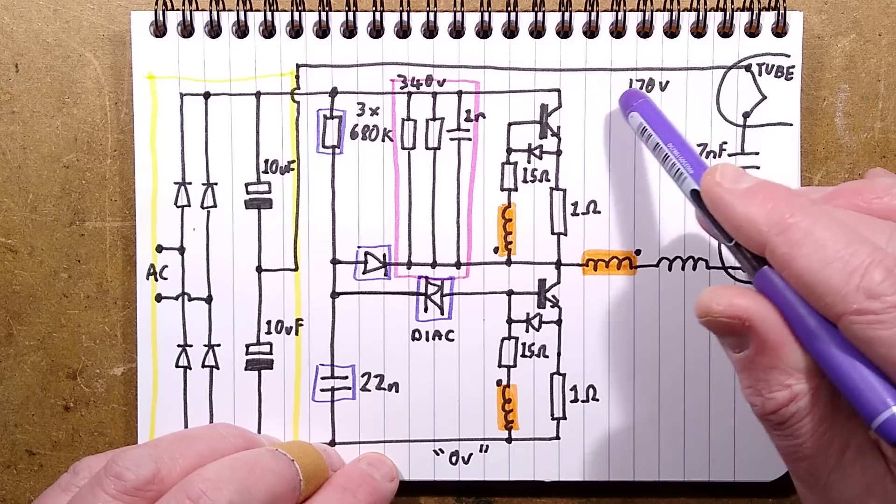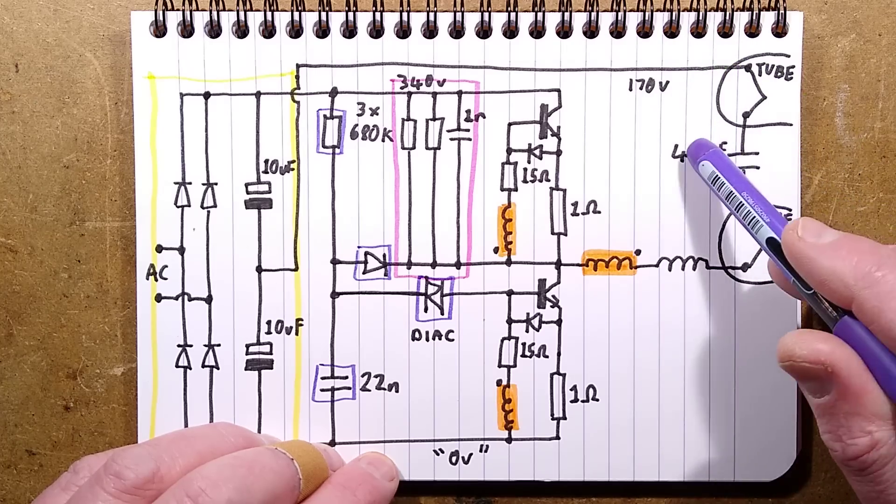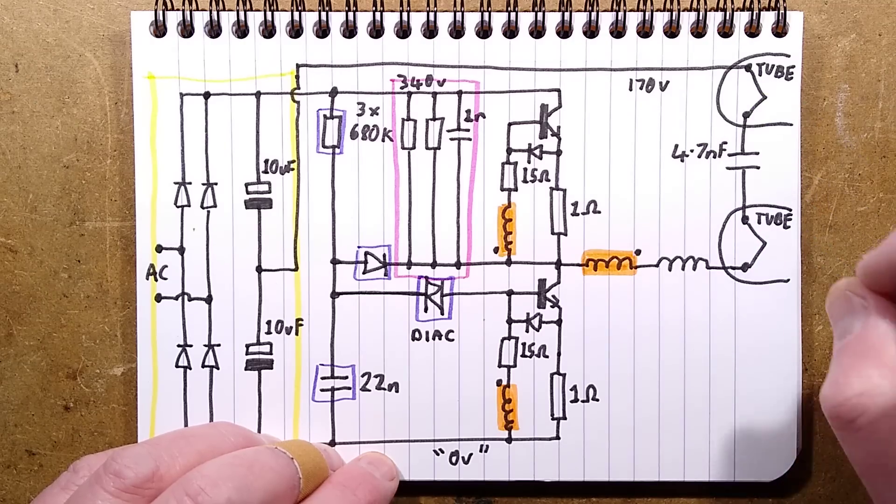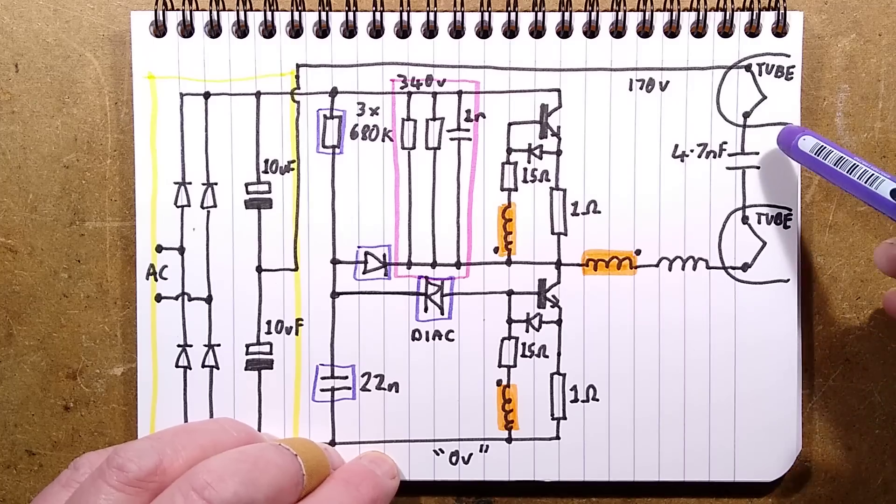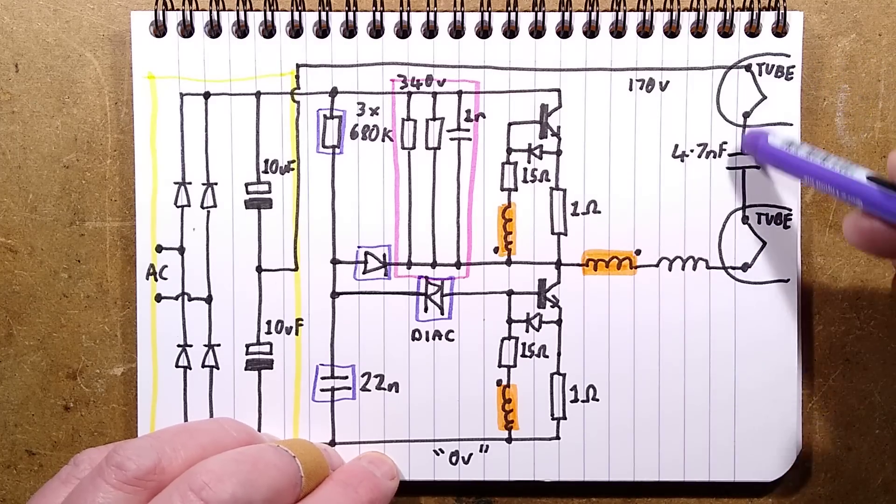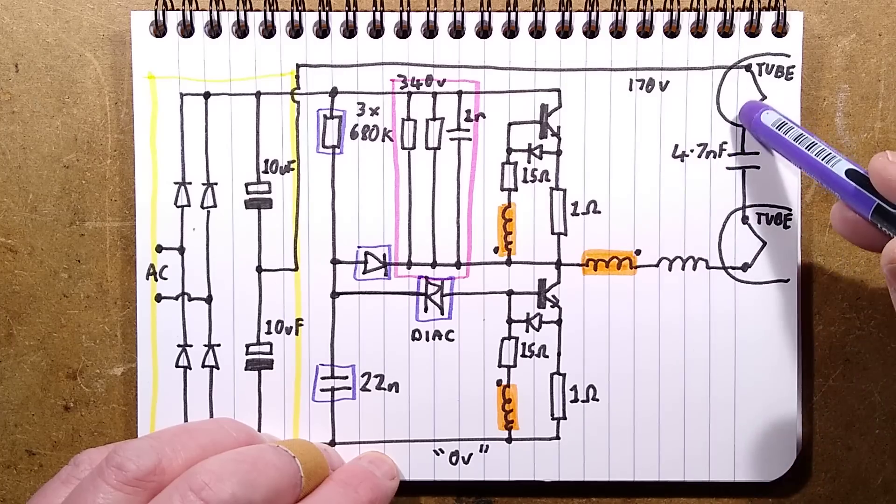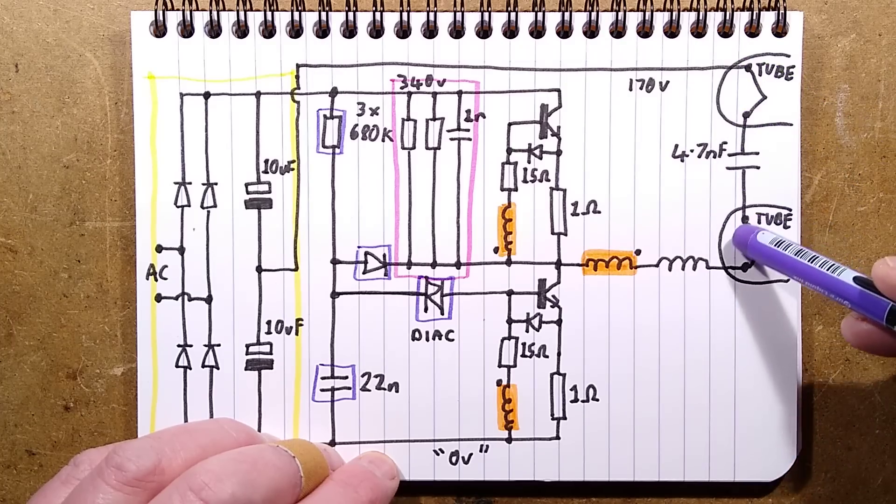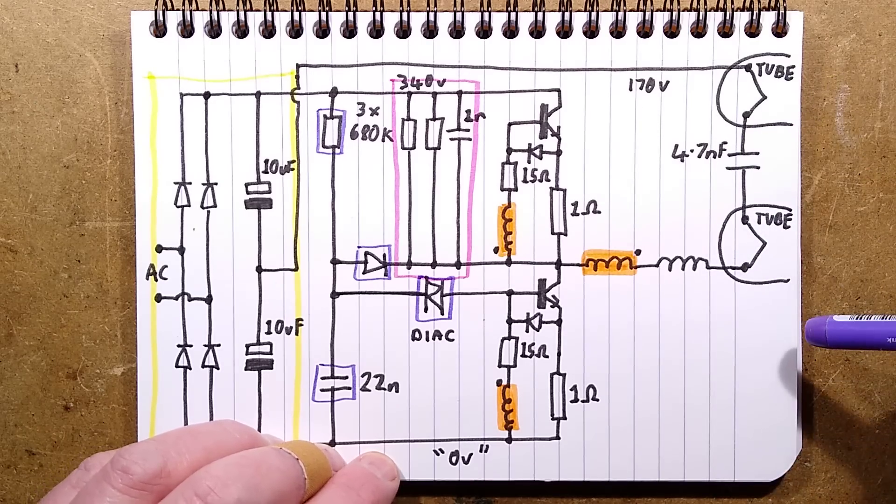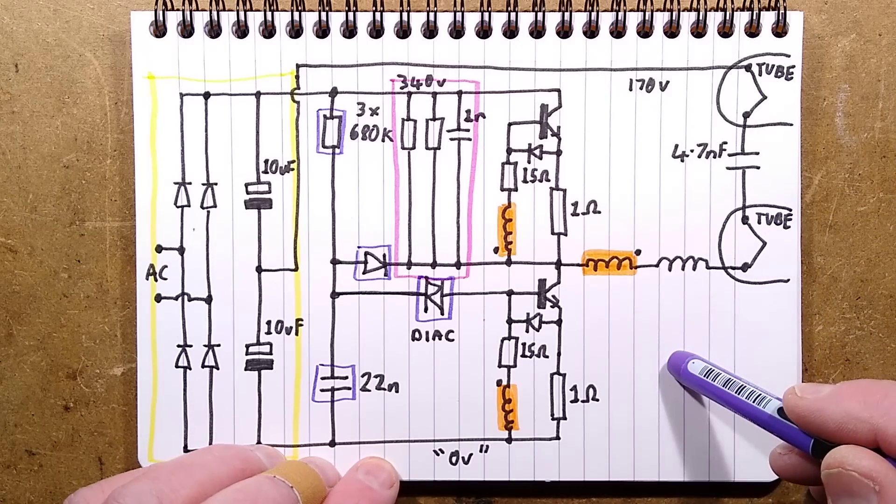So initially, if the tube hasn't struck, then current will flow through the heaters, through this capacitor here, and the heaters will heat up. When the tube strikes, and it happens virtually instantly, the voltage across the tube will drop to about 100 volts, typically, and that will result in current continuing to flow through the heater electrodes, but just at a reduced level. And it just maintains them at that hot state for running the tube. It treats the tubes quite well, actually, electronic ballasts.